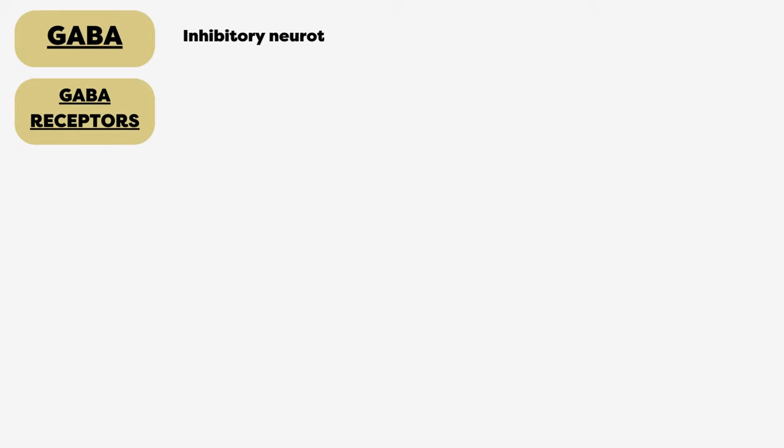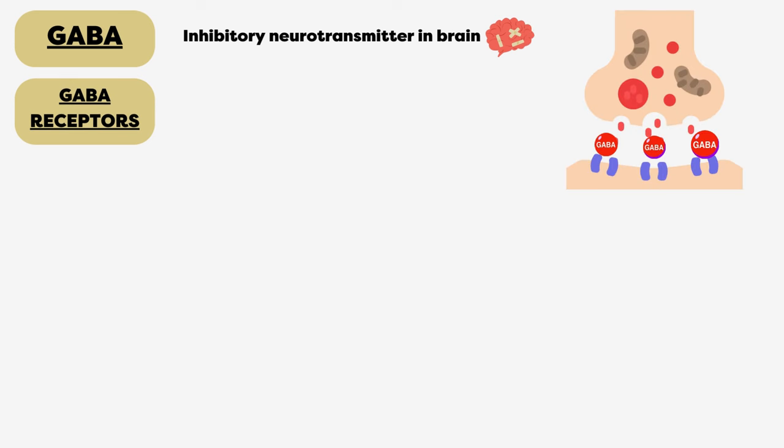Before going into details of drugs, first we will discuss GABA and GABA receptors. GABA is the inhibitory neurotransmitter in the brain. It binds to GABA receptors and decreases the activity of target cells. GABA receptors are further divided into three types: GABA A, B, and C.